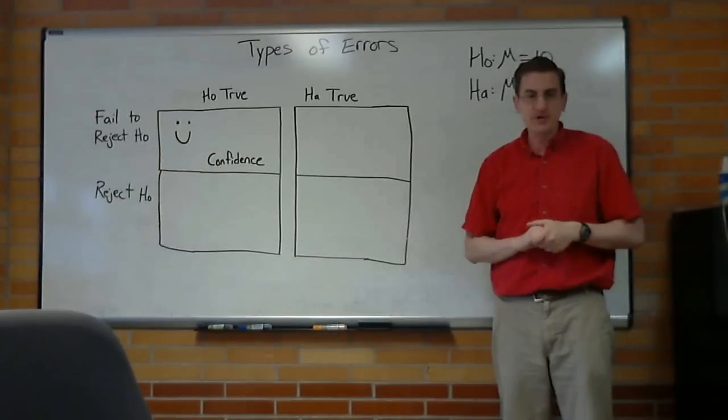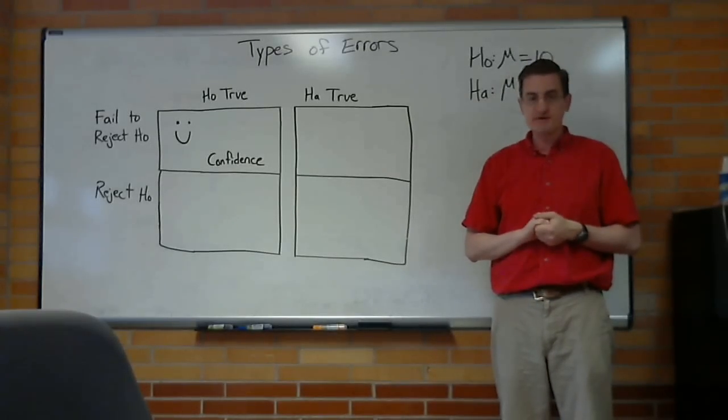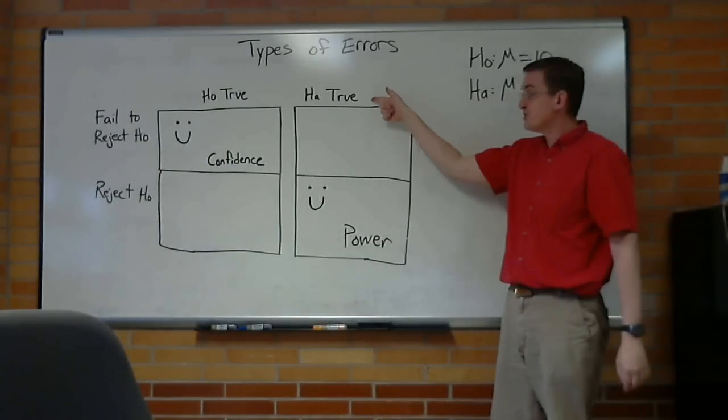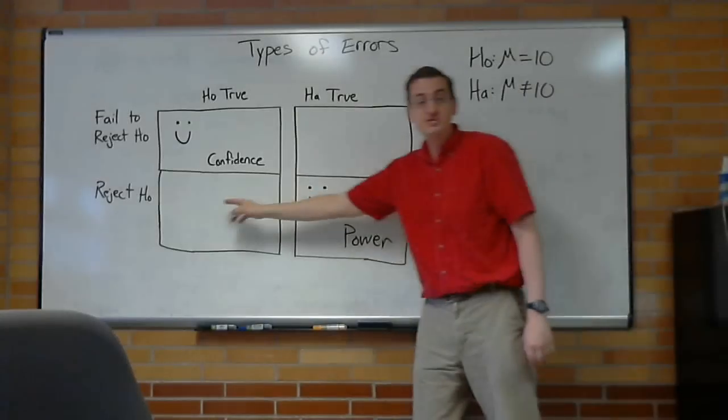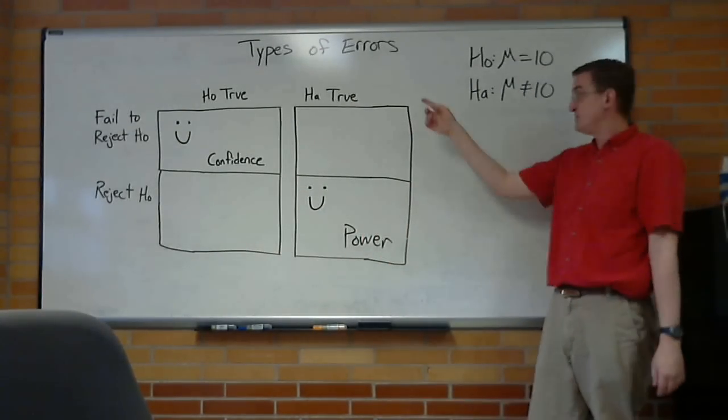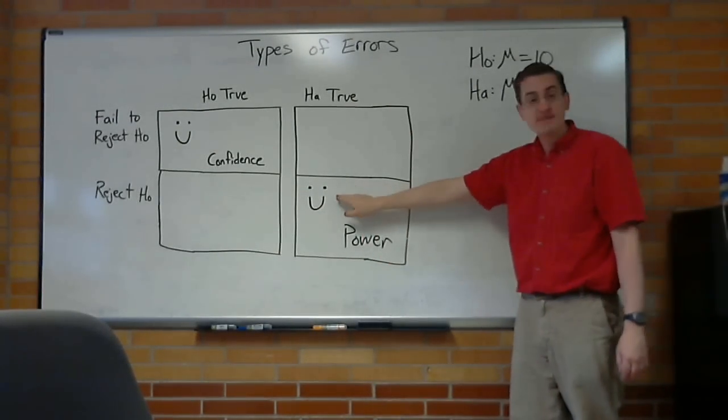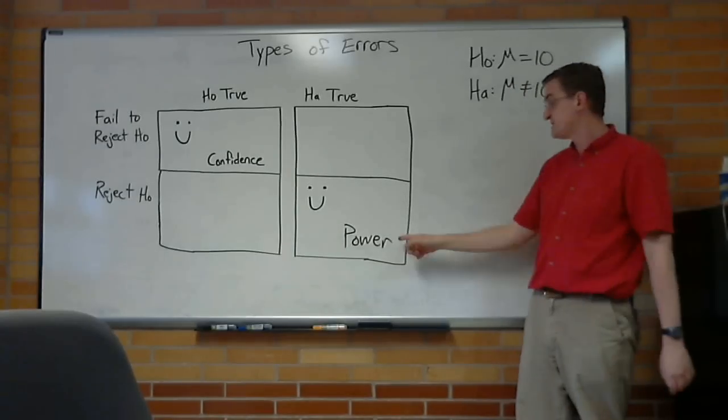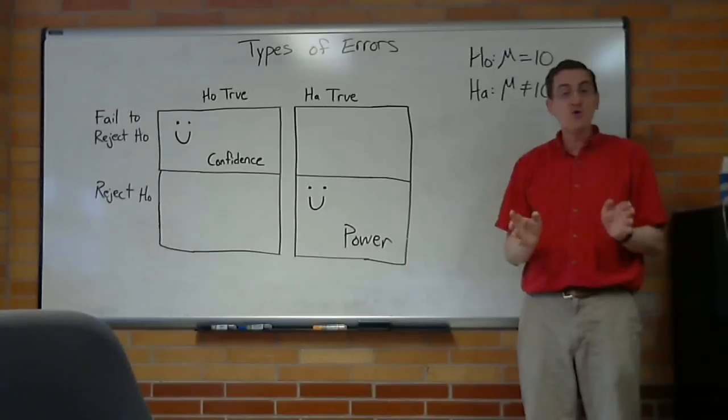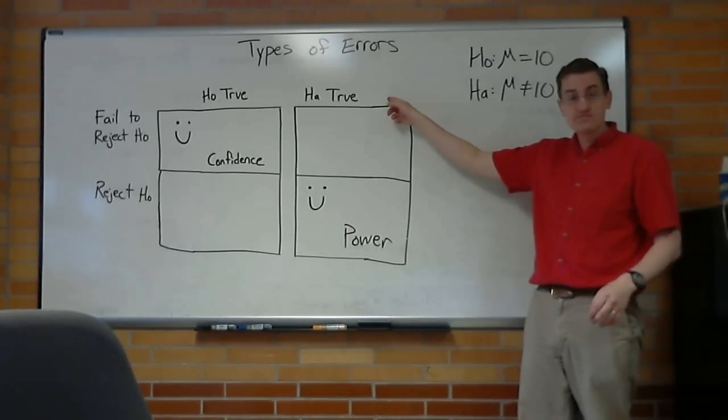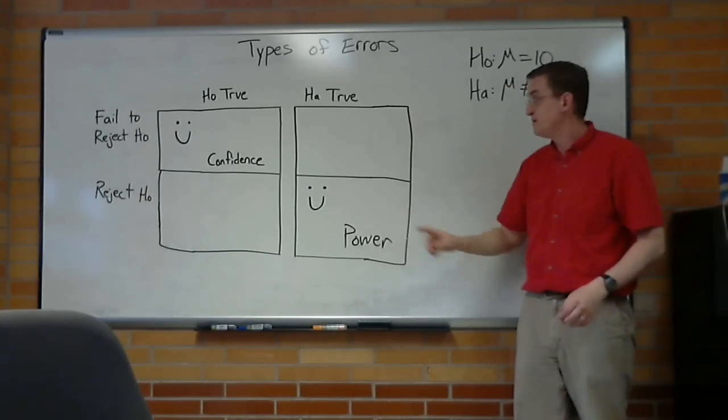There's another scenario here that's good. Can you guess which one? You have like one second unless you pause the video. It's when the alternative was true, and so we rejected the null. Rejecting the null means we believe the alternative, that was the truth, that's why it makes us happy with the smiley face, that's called power. How often, if the alternative really was true, would you be rejected?